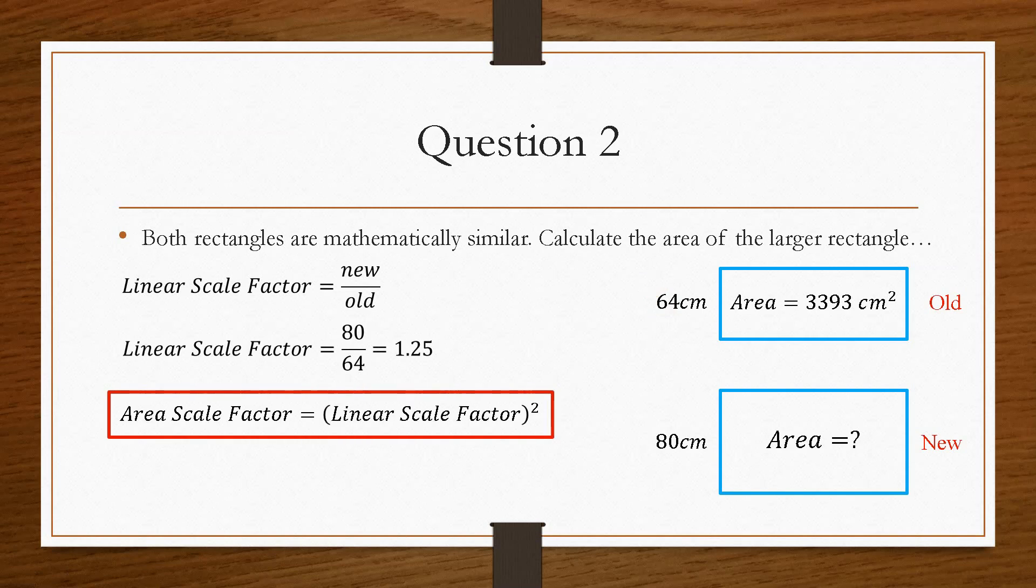Now, this is the only difference when you deal with an area scale factor. That's the only difference when you deal with an area scale factor is that we have to take the linear scale factor and square it, because our area is centimetres squared. And our linear scale factor, when we multiply this by a length, would be centimetres. So we need to square this and bring it up to the same power as an area.